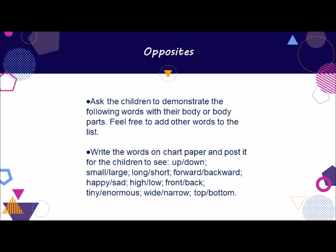Slow and fast are opposites, but if you want to focus on other opposites, try this next activity. Ask the children to demonstrate the following words with their body or body parts. Write the words on chart paper and post it for the children to see: up, down, small, large, long, short, forward, backward, happy, sad, high, low, front, back, tiny, enormous, wide, narrow, top, bottom. Once the children have the hang of this, another way to explore opposites is for them to work in partners, with each partner demonstrating one of the two word pairings. For example, if you call out 'high,' one partner forms a high shape, such as standing on tiptoe with arms above the head. As that partner holds her position, call out 'low,' which her partner demonstrates, for instance by crouching near the floor. This gives the children an opportunity to see the contrast between the two words.